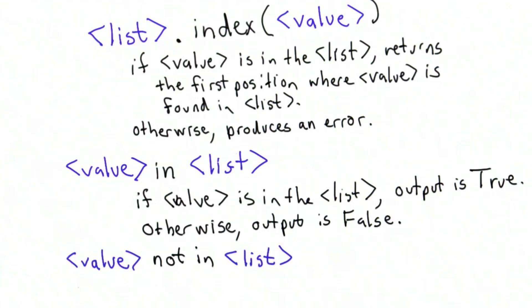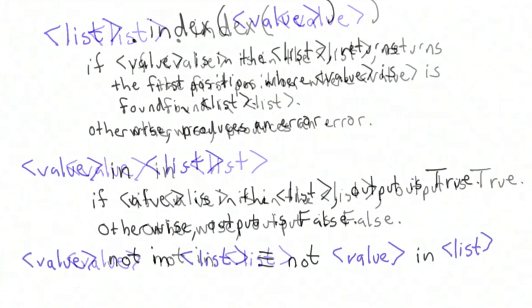If the value is in the list, then the result of value not in list is false. The value not in list is exactly equivalent to saying not value in list. The only reason to have the not in is it's more natural to read it this way in English than having the not between the value and the in.